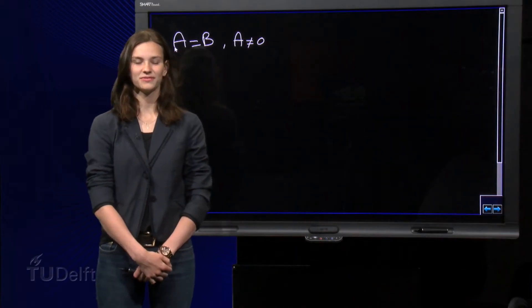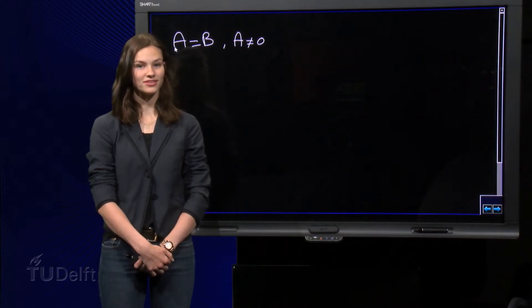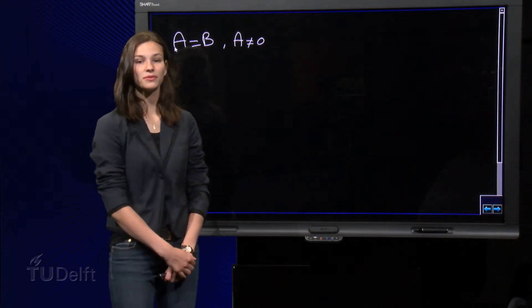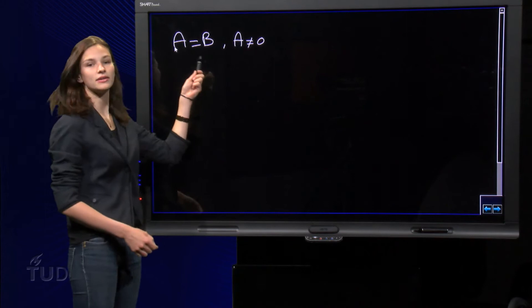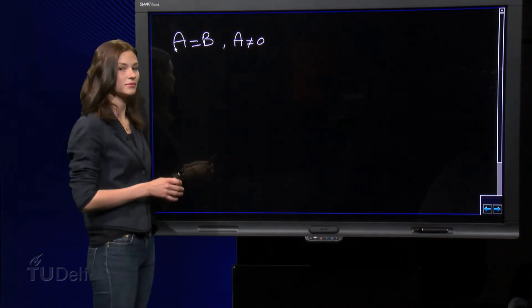Welcome to another Catch the Error video. In this video I will show you that 1 is equal to 2. We start with the identity. We say A equals B and A can be any number except 0.